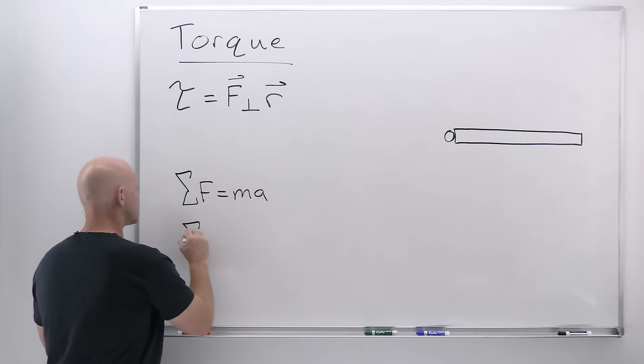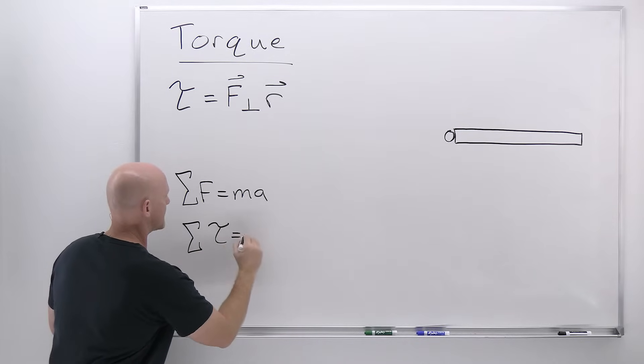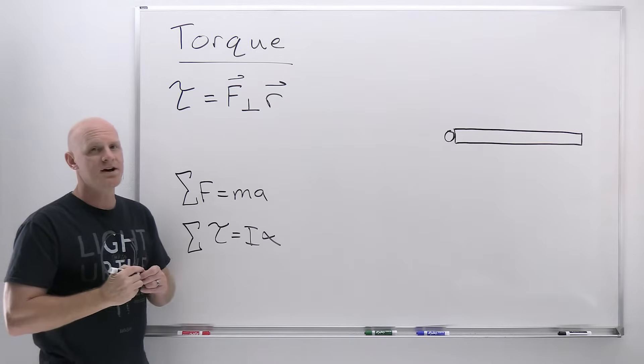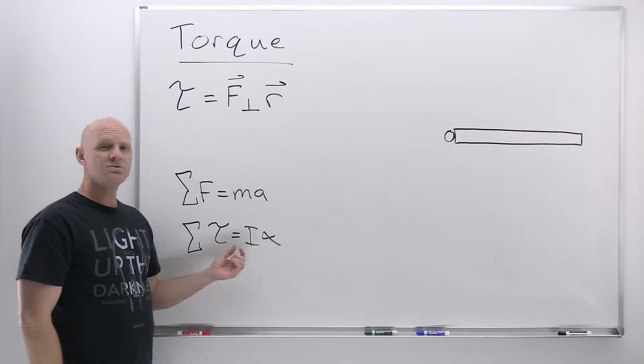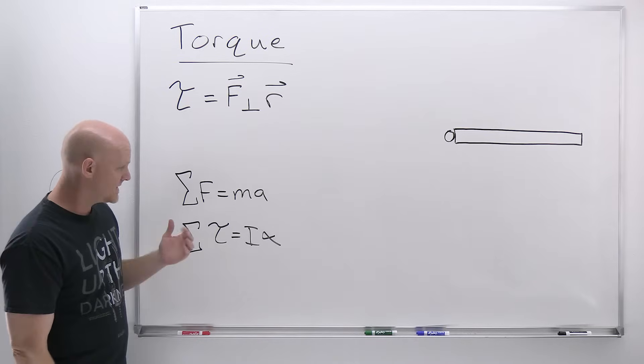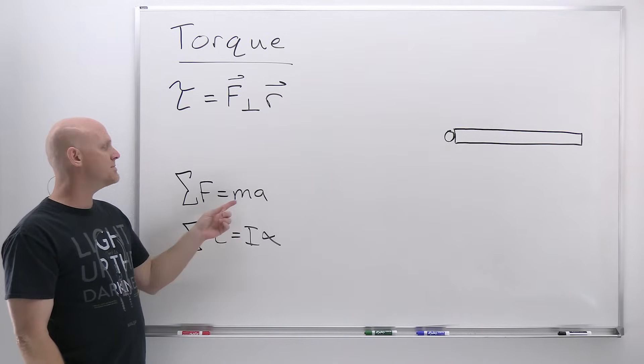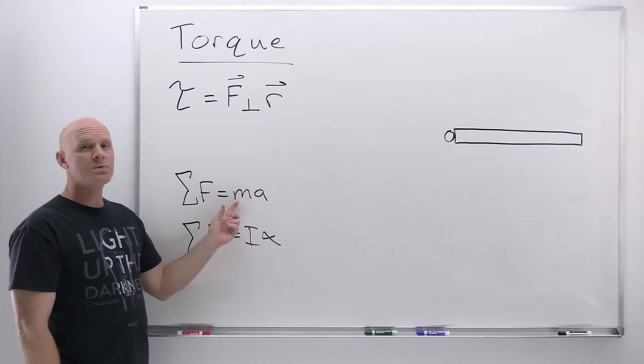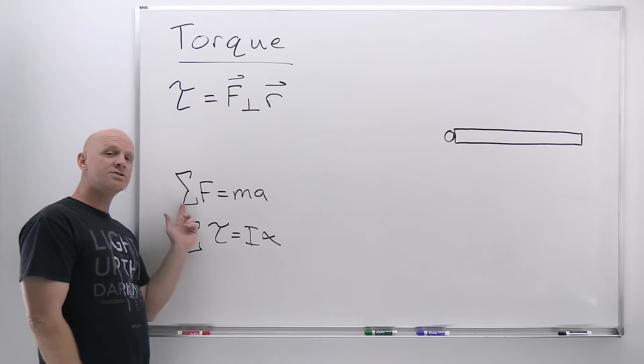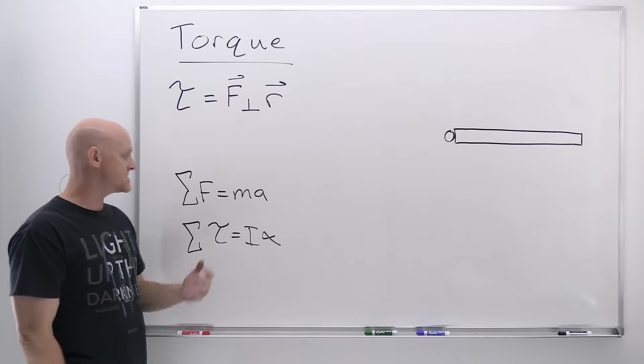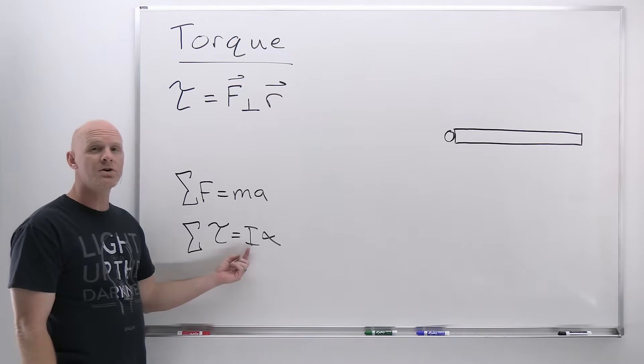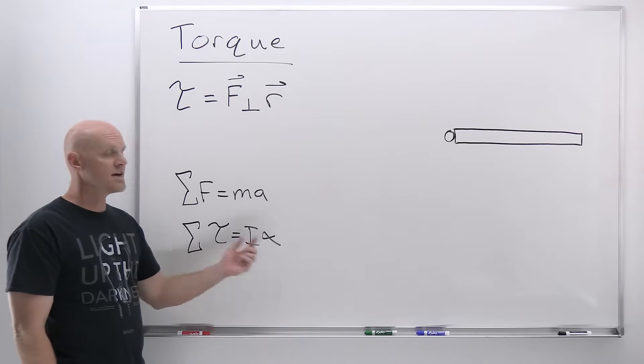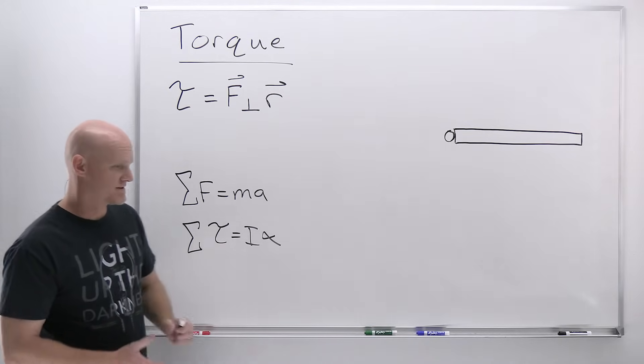In similar fashion, if there is a net torque acting on an object, it will result in a net angular acceleration as well. This i here is what we call the inertia or moment of inertia more specifically. For an object with a larger moment of inertia, it will require a larger torque to give it a given angular acceleration.